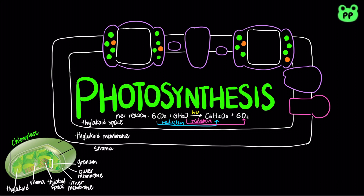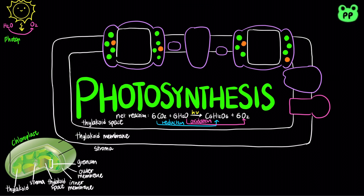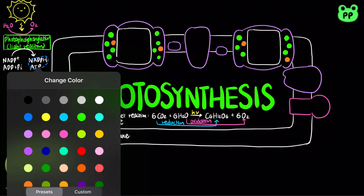The oxidation and reduction take place in two separate stages of photosynthesis. The first stage involves photophosphorylation, also known as the light reactions, which takes place in the thylakoid membrane. Photophosphorylation oxidizes water to oxygen and transforms light energy into the chemical energy of ATP and NADPH.